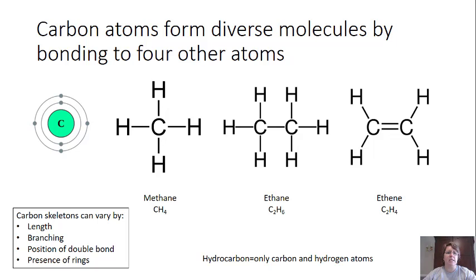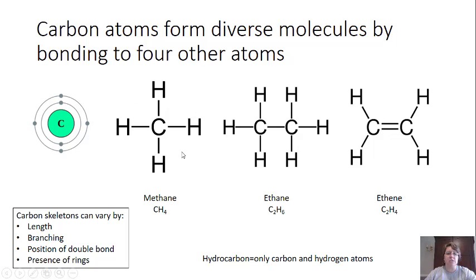One of the first things we need to lay the foundation for in this chapter is that carbon atoms form diverse molecules by bonding to four other atoms. They have to form four different bonds. This is because carbon has six electrons, two in the inner shell, and that leaves four valence electrons available for bonding. Carbon is very versatile because of this. A simple structure where carbon is bonded to hydrogens gives you methane, CH4.